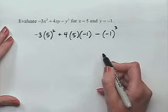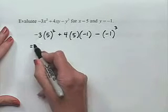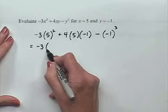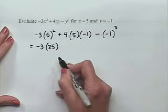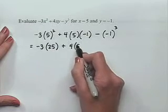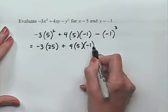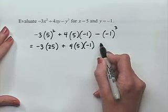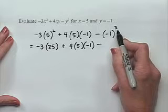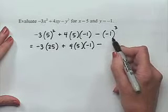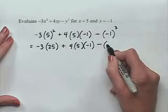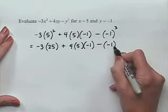Let's apply our exponent powers first. That gives us negative 3 multiplied by 5 squared, which is 25. Then we rewrite the middle term, which has no exponent. We raise negative 1 to the third power: negative 1 times negative 1 times negative 1 equals negative 1.